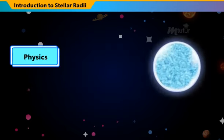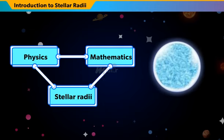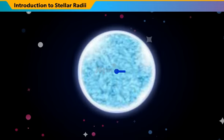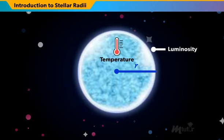Surprisingly, physics, along with mathematics, has given us the method to find the size of stars by determining their stellar radii. The stellar radii of a star can be calculated if the luminosity and temperature of a star are known.